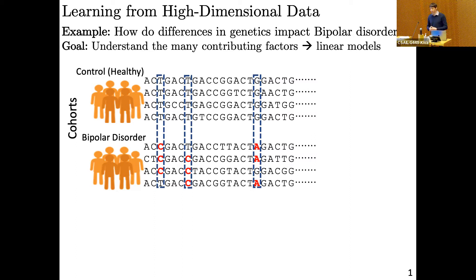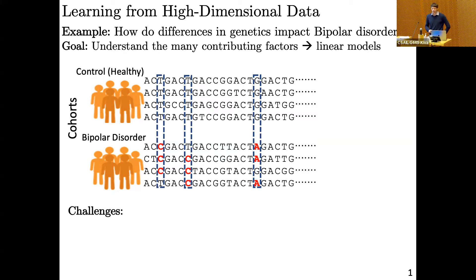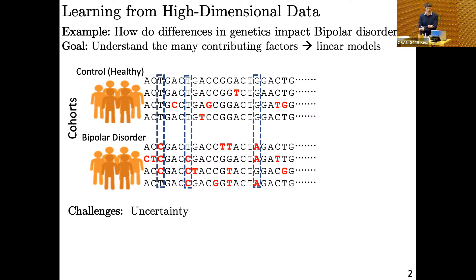Although neural networks and other complex models might seem to be solving every problem these days, for problems like this where interpretability is really the goal, the simplicity of linear models has meant that they've remained ubiquitous and the go-to across the sciences. But there are some challenges to applying linear models in high-dimensional settings like this. In particular, there's a lot of variation throughout the genome that could be associated with this disease state but isn't actually causing this variation. So it's important to disentangle these real versus spurious correlations that lead to uncertainty in the conclusions that we want to make.